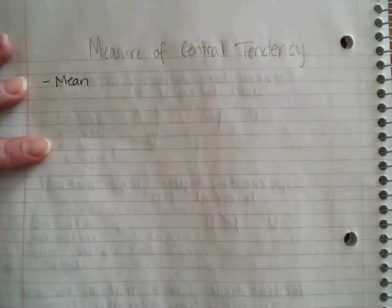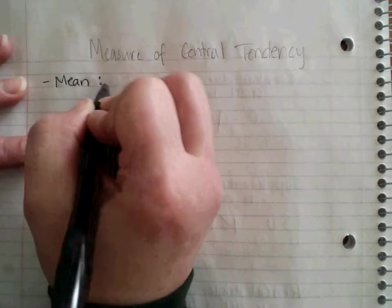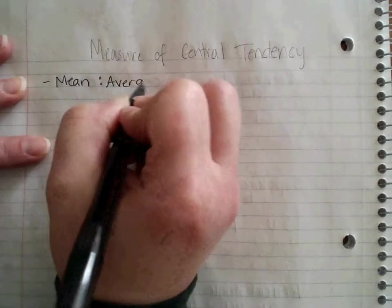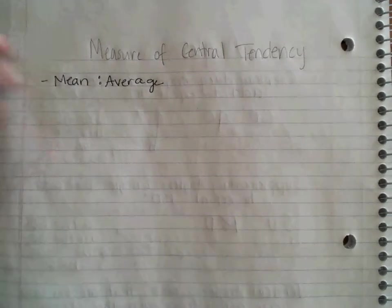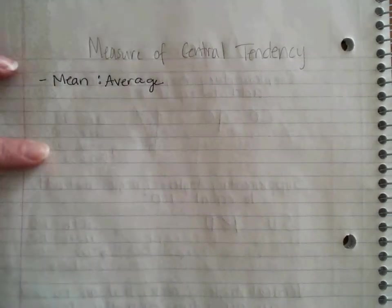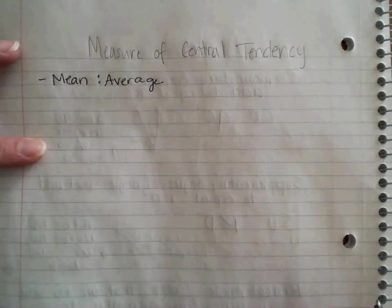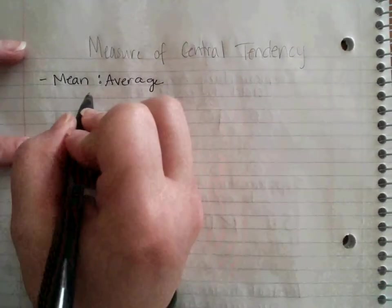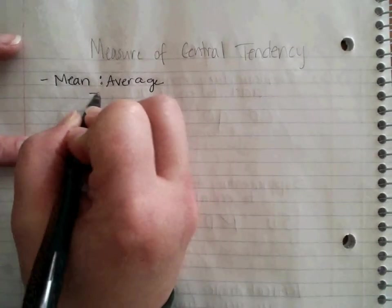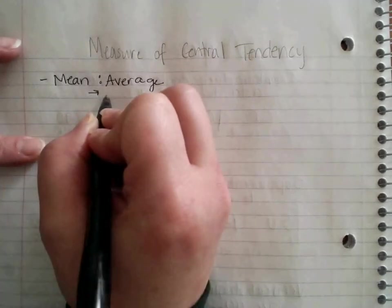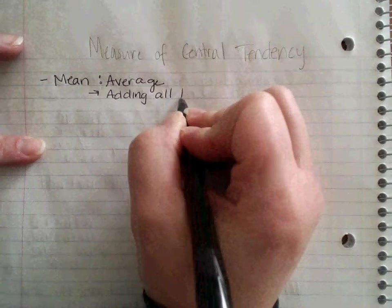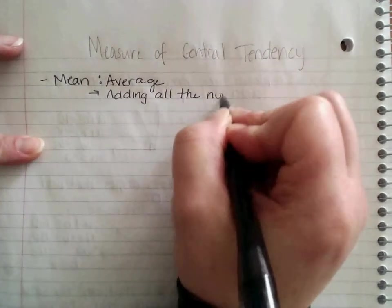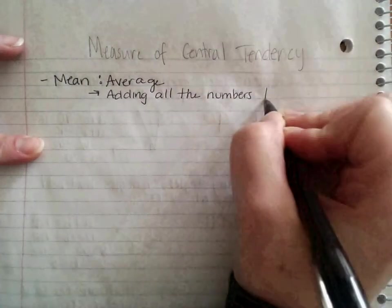And what mean means to us is the average. Average is that middle amount of the data values that we have. Now, to find our average, find our mean, we're going to follow the step of adding all the numbers together.